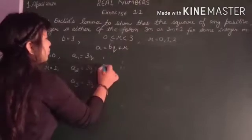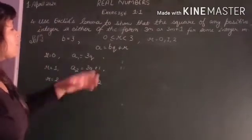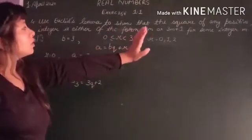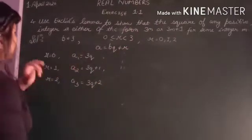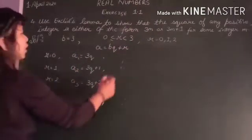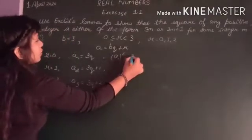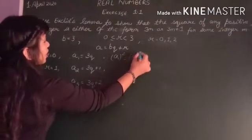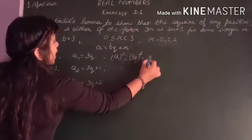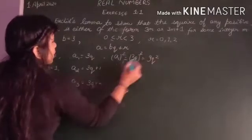Now what we need to prove is that the square is in the form of 3m or 3m plus 1. So we will find out a1 square is equal to 3q whole square, which is 9q square.